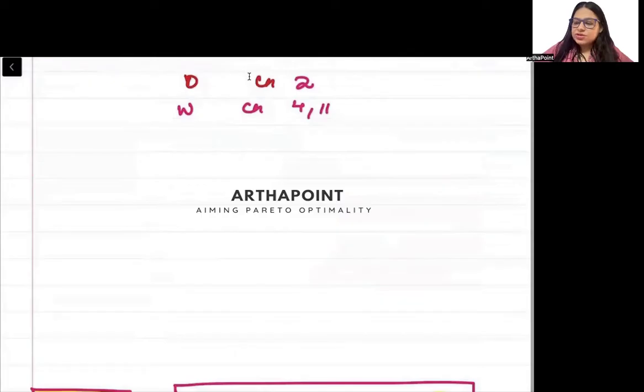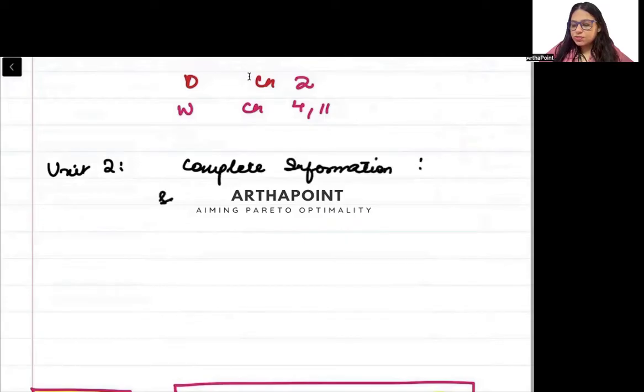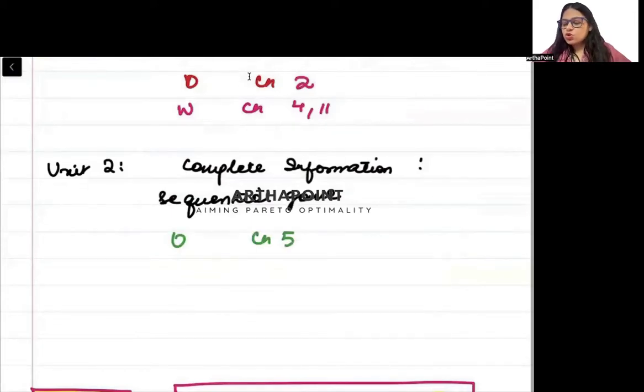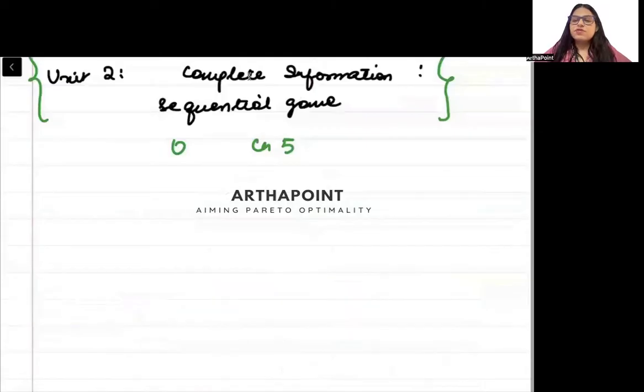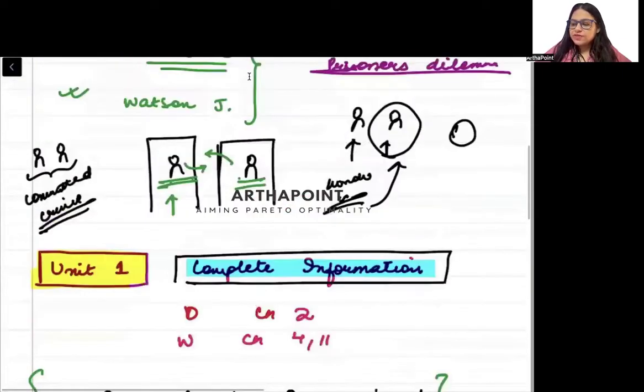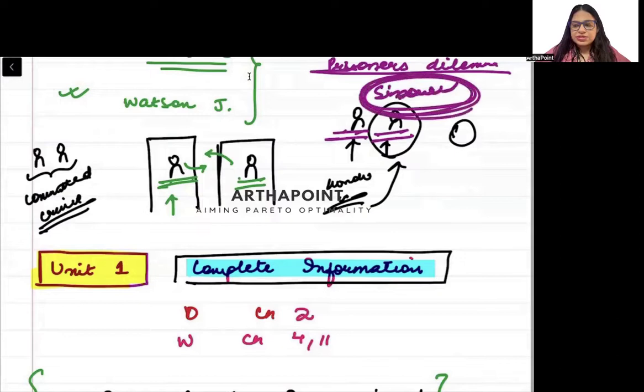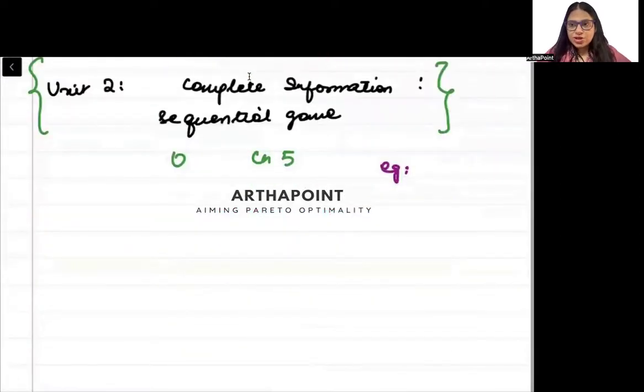Now let us go ahead and talk about units in between. So unit 2 is also complete information but it is actually sequential. This means Osborne chapter number 5. So unit 2 is complete information sequential game. So what is sequential game? Sequential games are games in which first one player will show their strategy and then the second player will show their strategy. So for example, this means I have told you that these two individuals have to decide on their own whether they will put in hard work or not, but they have to decide simultaneously.